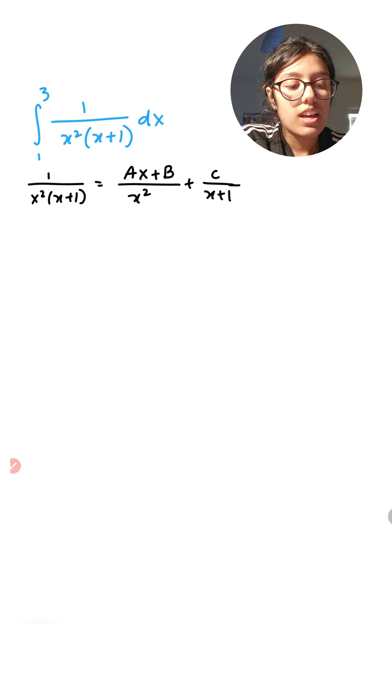So basically, the exponent should be one less than the bottom for the top. And in this case, I am now going to simplify it.